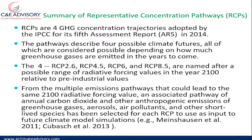RCP 2.6, 4.5, 6.0, and 8.5 are named after a possible range of radiative forcing values in the year 2100, relative to pre-industrial values. From the multiple emission pathways that could lead to the same 2100 radiative forcing value, a related pathway of annual CO2 and other greenhouse gas emissions — as well as short-lived species such as aerosols and air pollutants — has been selected for each RCP to use as input into future climate model simulations.